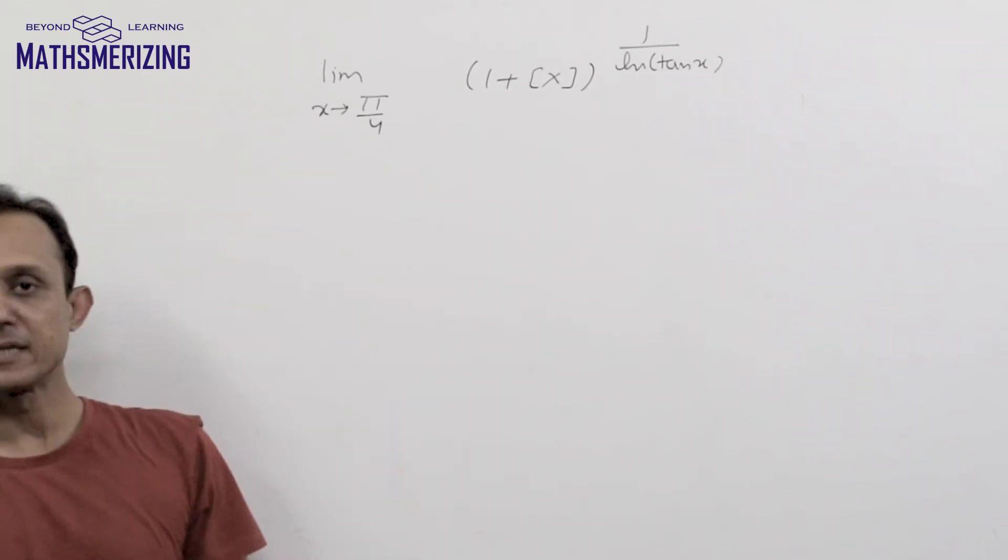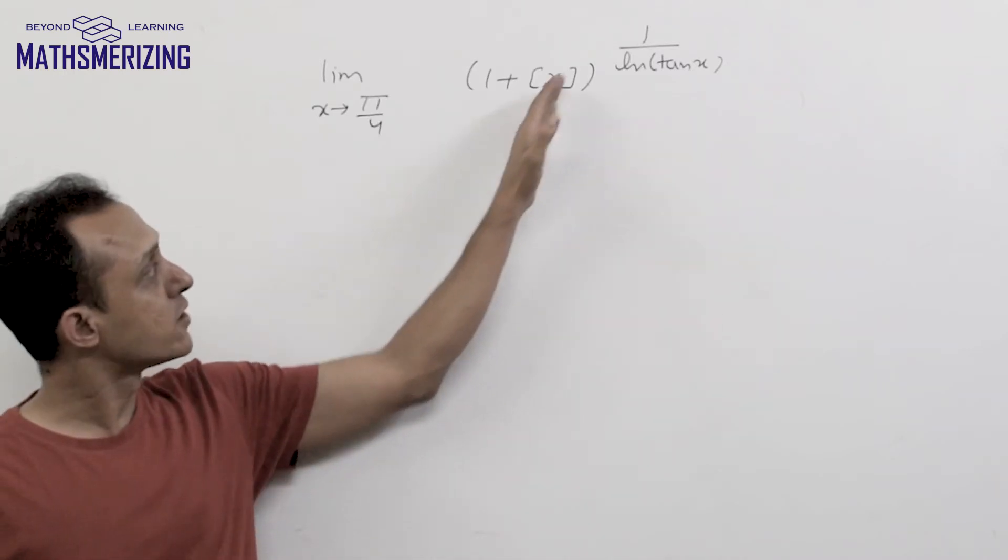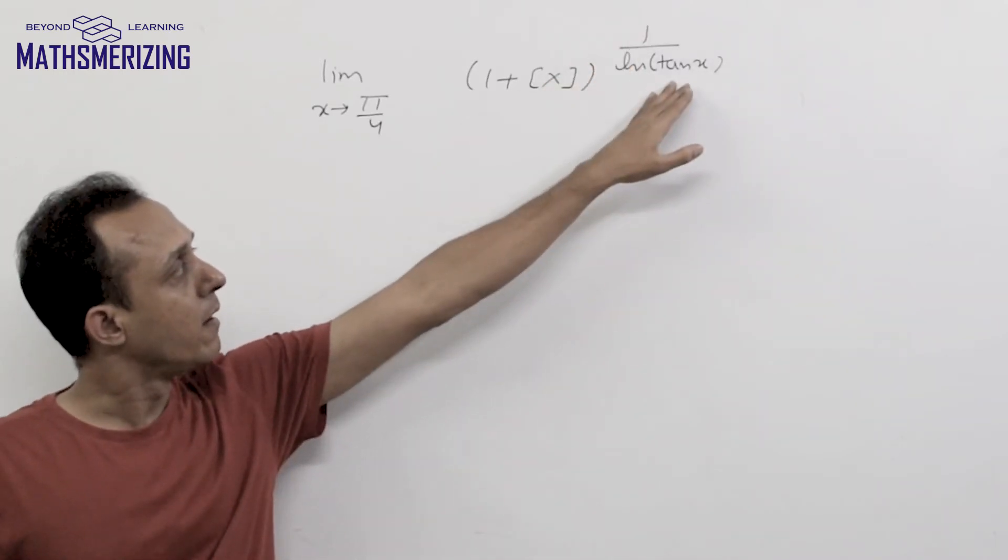Now let us take another question which is limit x tends to pi by 4, 1 plus the greatest integer function of x to the power 1 upon log 10x.